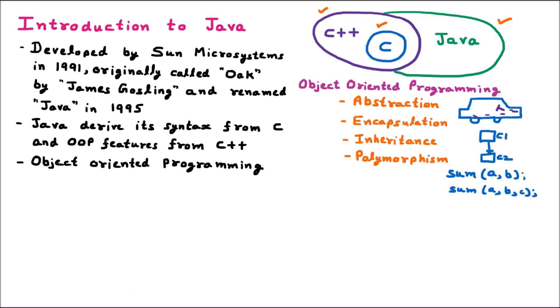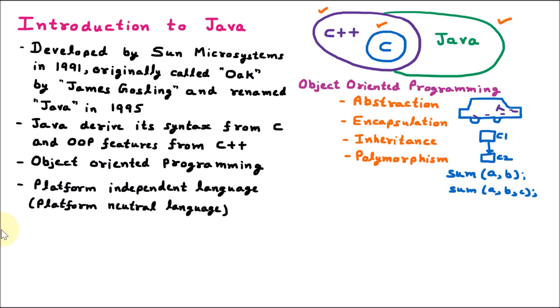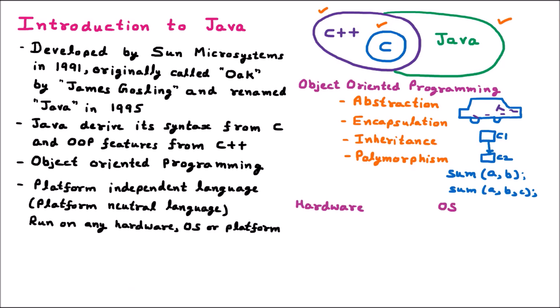The most important feature of Java is that it is a platform-independent language, also called a platform-neutral language. Java can run on any hardware or any OS or platform. In the hardware we have primary memory and secondary memory. Primary memory is the RAM and secondary memory is the hard disk, and today we also have the SSD.